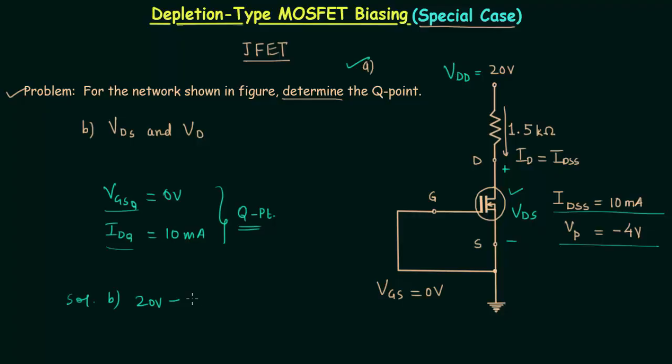ID is the drain current, which is 10mA. So 10mA multiplied by 1.5kΩ. After this, we have minus VDS equal to zero.